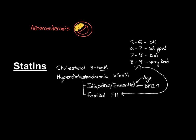Depending on where it occurs, you'll get different consequences. It can happen in the coronary arteries — the arteries that supply the heart with blood — and we call that coronary artery disease. It can happen in the arteries within the brain, and we call this cerebrovascular disease, CVD for short. The other common place it affects is what we call peripheral arterial disease, which almost always refers to the arteries of the legs — the big arteries that supply the legs with blood.